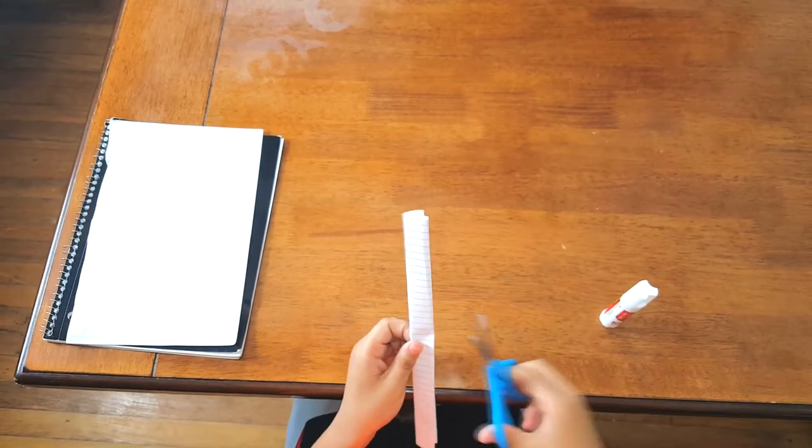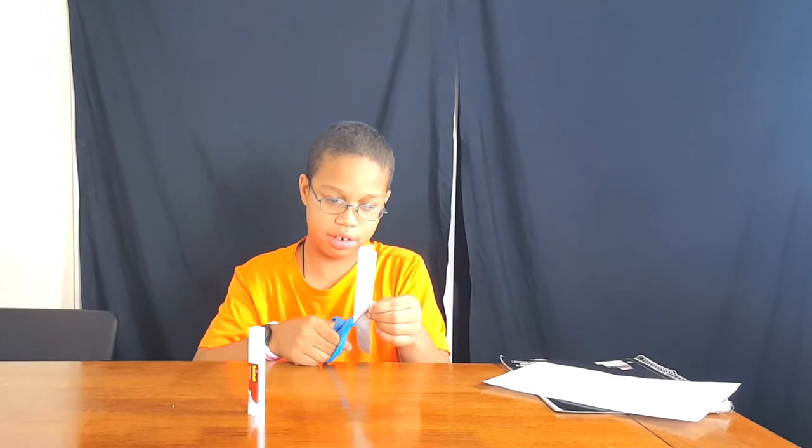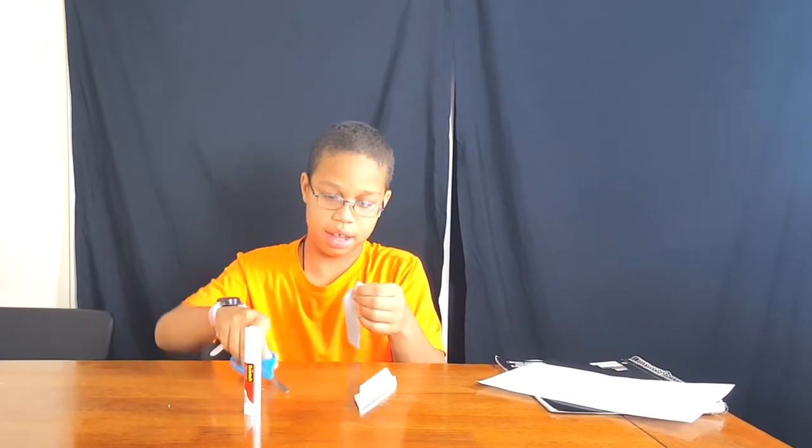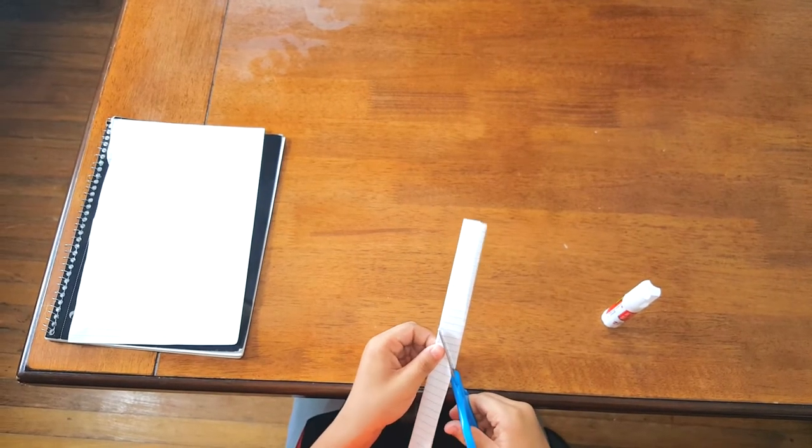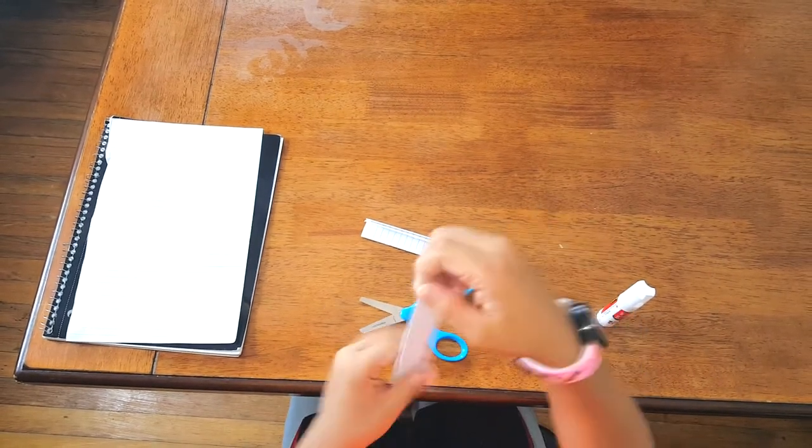And get your scissors. And then you're going to cut. That's a diagonal way. Cut it as best as you can to make a little sharp tip. So now you have the point.